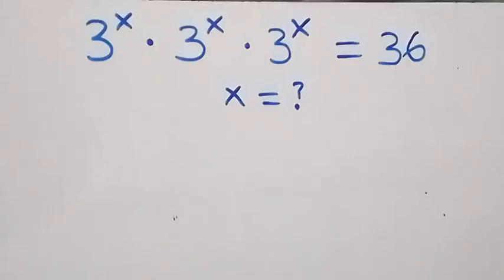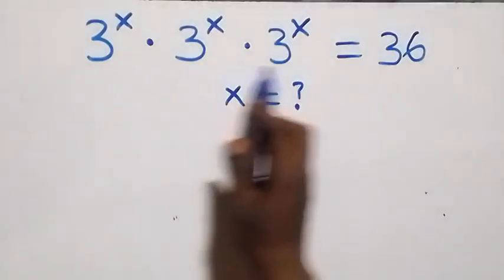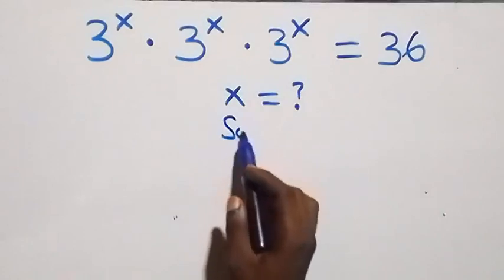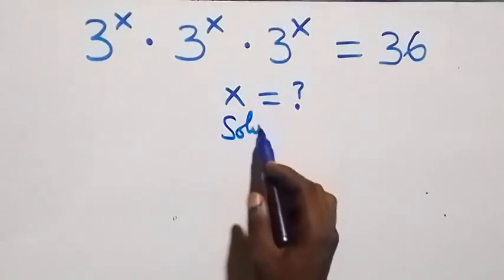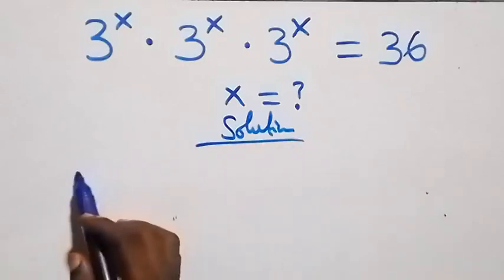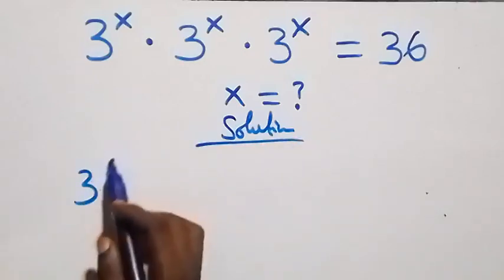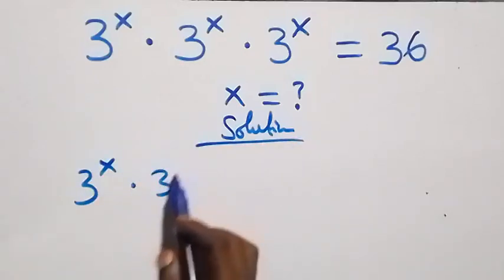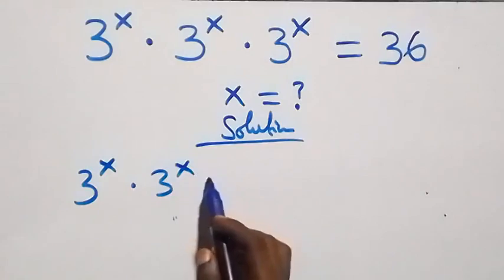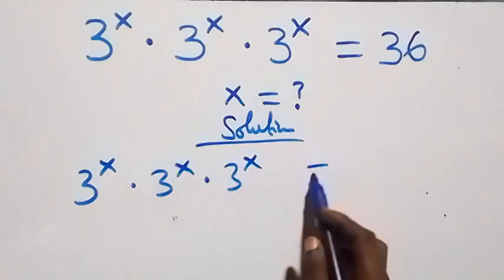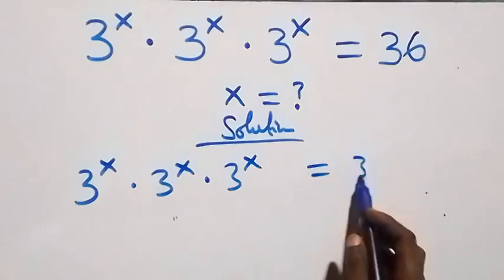Hello, you are welcome. Here we solve this nice exponential equation. What we have is 3 raised to power x, times 3 raised to power x, times 3 raised to power x, equals 36.